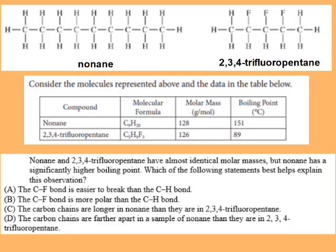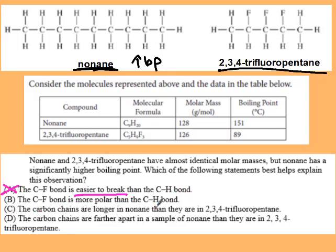Looking at why nonane has a higher boiling point than 2,3-trifluoropentane: we don't break bonds during boiling, and the CF bond being more polar would actually suggest the fluorinated compound should have a higher boiling point—not nonane. The carbon chains are longer in nonane, giving it more electrons and a greater chance of having momentary dipoles—more polarizability—and therefore stronger London dispersion forces.